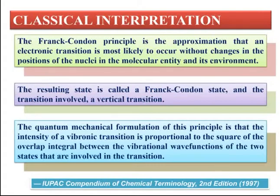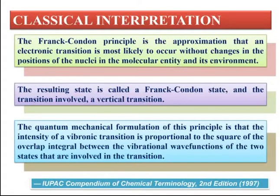During the statement of the Franck-Condon Principle, we have already seen that the two vibrational levels of the ground electronic and the excited electronic state should be overlapping with each other so that the vibronic transition could take place. The quantum mechanical formulation says that the intensity of that vibronic transition is directly proportional to the square of the overlap integral of wave functions of the two vibrational energy levels of the ground energy state and the excited energy state.